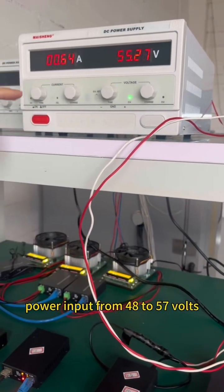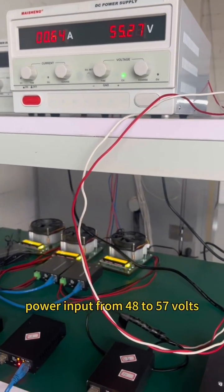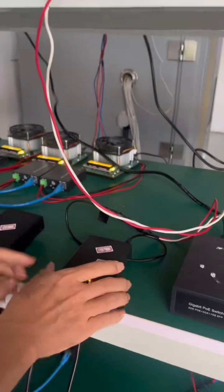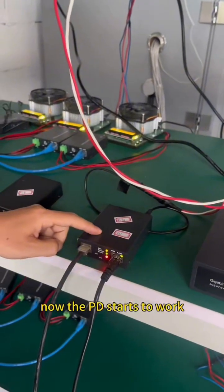Power input from 48 to 57 volts. Now the PDN starts to work.